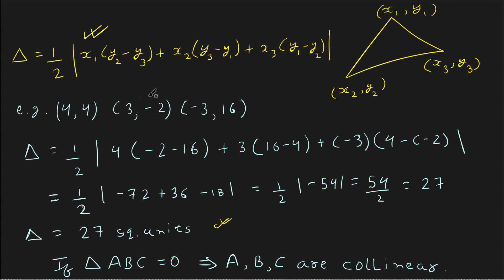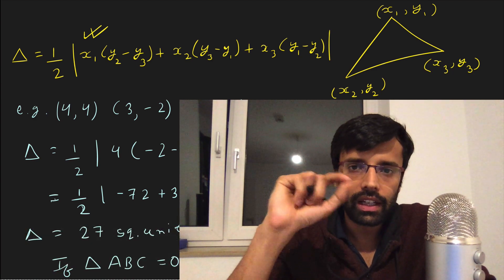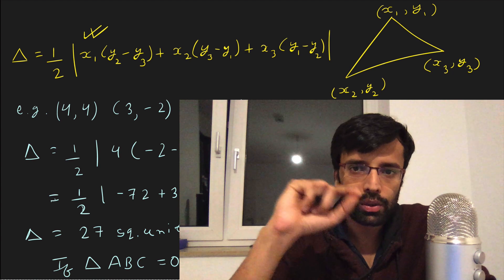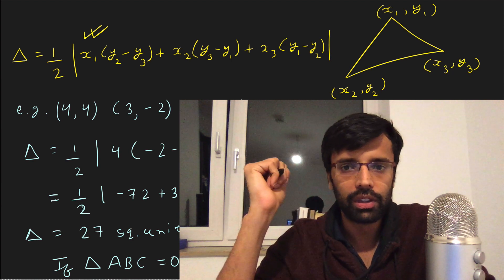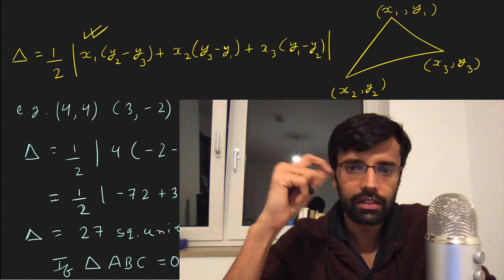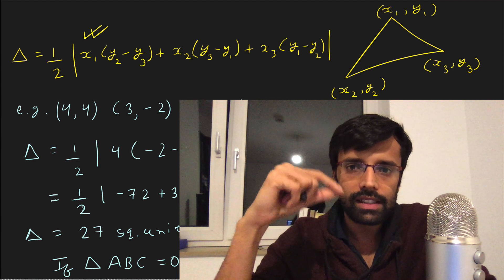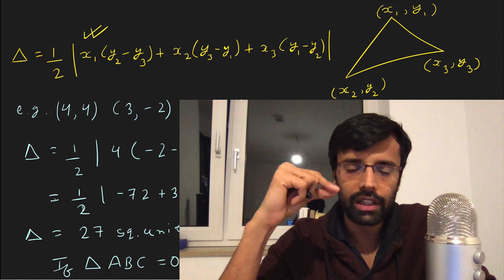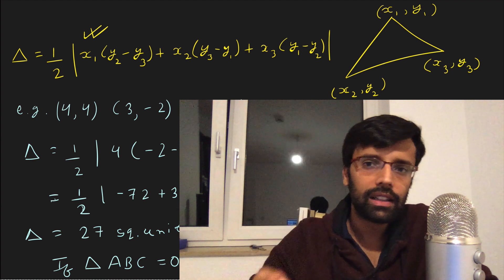So there are two ways to check collinearity: one is slope — slope of AB equals slope of BC; the other is triangle area — if the area is zero, then the points are collinear. These are simple concepts you can practice yourself. In the next lecture, we will move to equations of lines — how to write equations of lines when we know different information about straight lines. Thank you, see you in the next video.